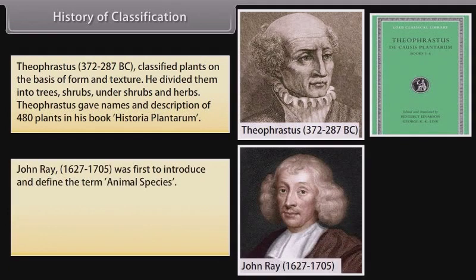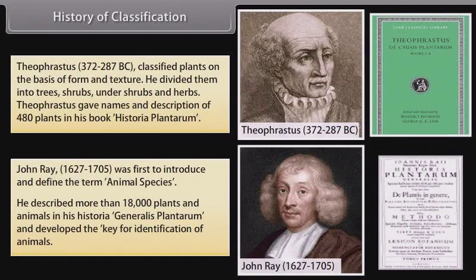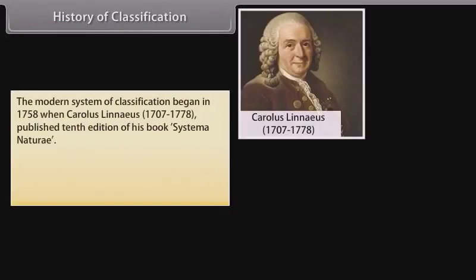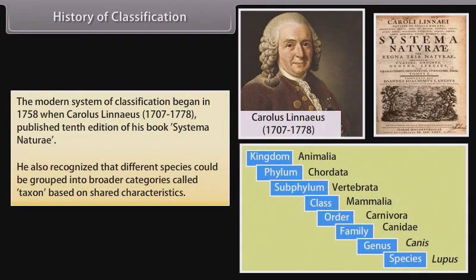John Ray (1627–1705) was the first to introduce and define the term animal species. He described more than 18,000 plants and animals in his Historia Generalis Plantarum and developed the key for identification of animals. The modern system of classification began in 1758 when Carolus Linnaeus (1707–1778) published the 10th edition of his book Systema Naturae. He also recognized that different species could be grouped into broader categories called taxon based on shared characteristics.